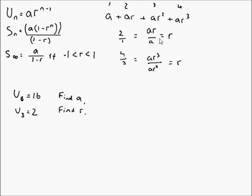You may think I'm not giving enough here, but let's write these out in their geometric form. 16 is equal to ar to the power of 5, and u3, which is 2, is equal to ar squared.